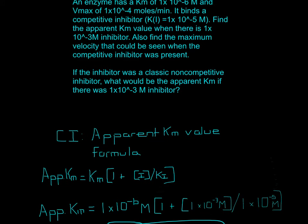The apparent Km formula is something you memorize. The formula is: apparent Km = Km × (1 + [I] / Ki), where [I] is the inhibitor concentration and Ki is the inhibitor constant. Note that it's in brackets, meaning the multiplication and addition inside must be done first before multiplying by Km.